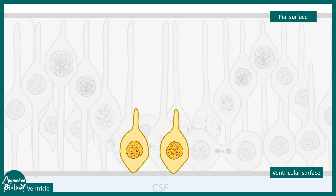Each of these daughter cells can divide symmetrically in the initial phase of nervous system development — the divisions are more symmetric. This leads to a greater number of stem cells, and this is known as transit amplification. This is how the nervous system increases the number of stem cells before giving rise to neurons.